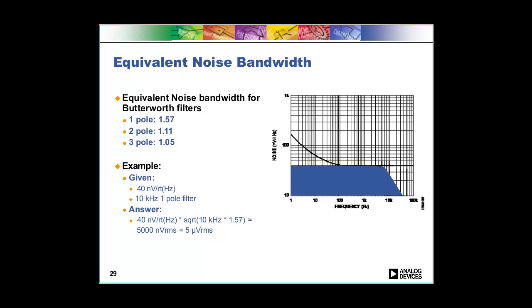So here we've got an example. Using the 40 nanovolts per root hertz of this plot, let's say we have a 10 kilohertz one-pole filter. The way you do it is you just multiply that 10 kilohertz by 1.57, you take the square root, you multiply it by the 40 nanovolts per root hertz, and you end up getting 5 microvolts RMS. So that's a real-life example of how you do it.